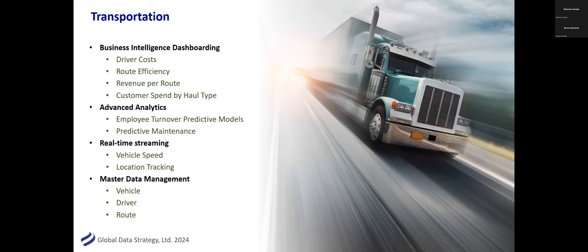We've also worked with public transportation — trains and buses — doing similar things. Literally tracking the location of trains and buses in real time, doing some Uber-like features. You get out of work and instead of taking an Uber, you get an alert: 'There's a train coming in five minutes — it's five dollars instead of thirty.' Many of these bigger players have open-sourced a lot of their analytic models, which other industries are now able to leverage. Master data management for transportation includes your vehicles, drivers, and routes — how do you optimize them?